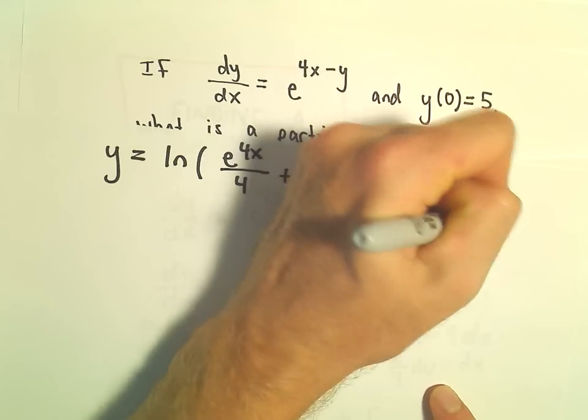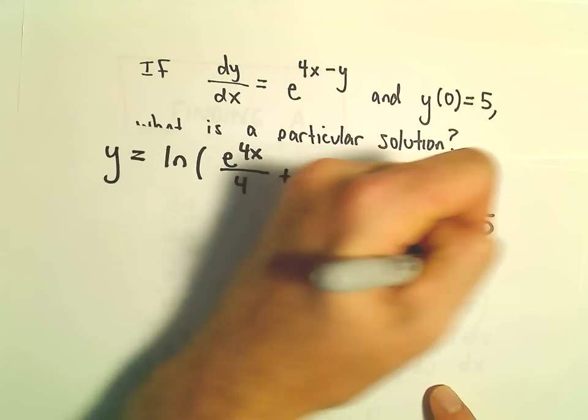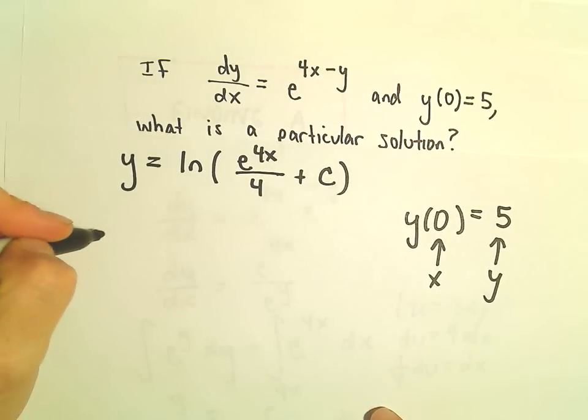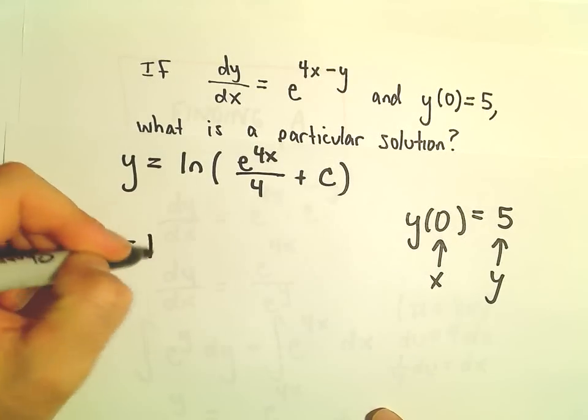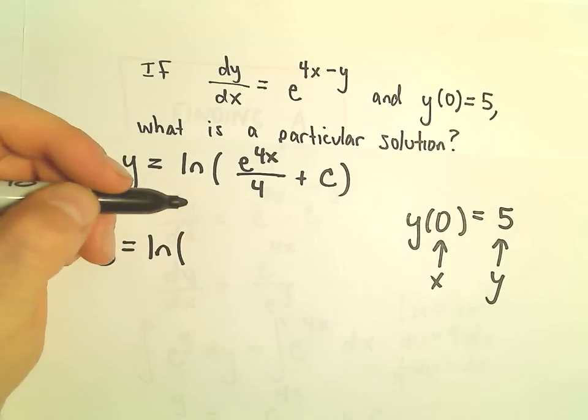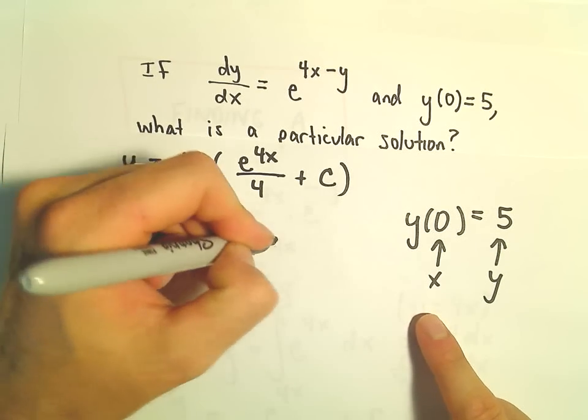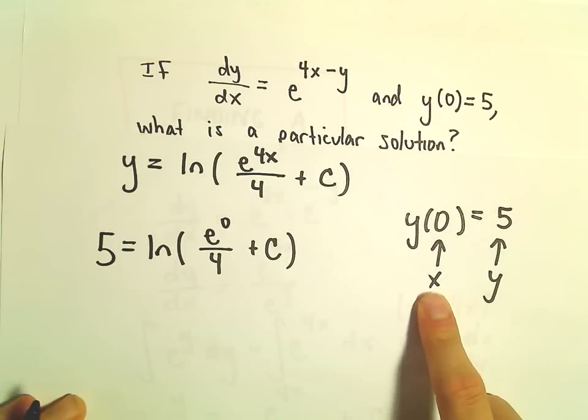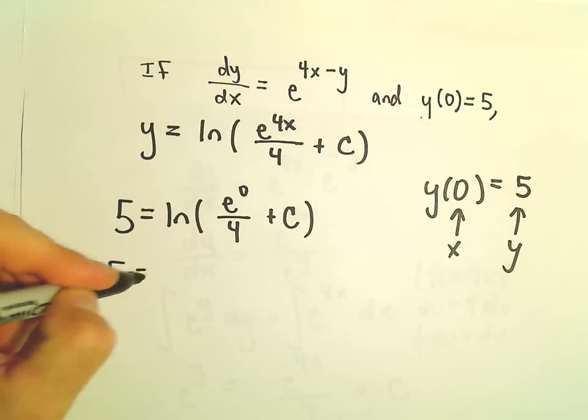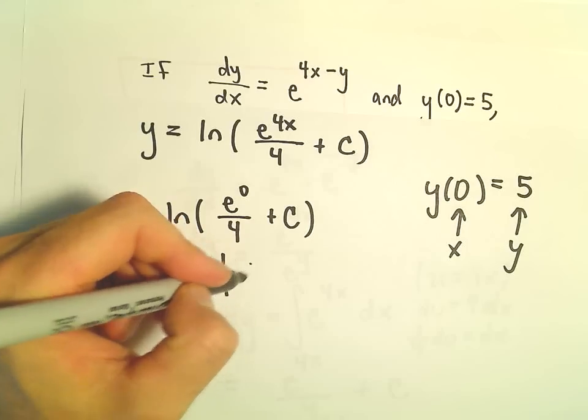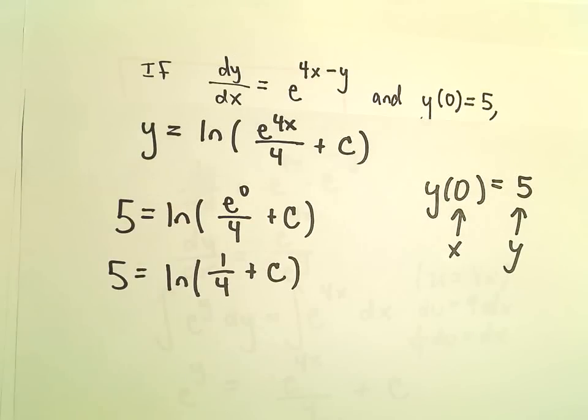So y(0) = 5. That's our x value and our y value. On the left side, we'll plug in 5. When we plug in x = 0, we have e^0/4 + C. Since e^0 = 1, we have 5 = ln(1/4 + C).